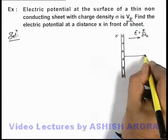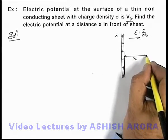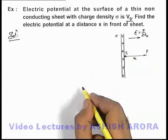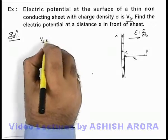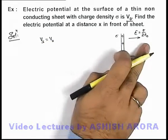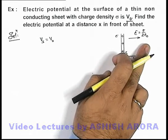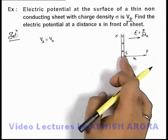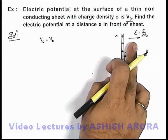At a distance x from the surface of the sheet there is a point P, and on its surface there is a point S. We are given that the potential at surface point S is V-not, and we know that in the direction of the electric field, electric potential always decreases. That means potential at P is certainly less than potential at S, and here the electric field is uniform.